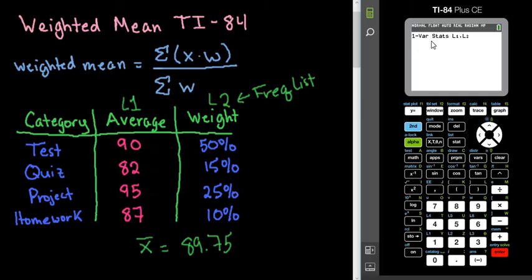To do this, you would just do the 1VarStats. Like I said, the stat. Go over to the Calculate, option 1. And then you would do 2nd. The number 1 would give you L1. The comma button is right here above the 7. And then I would do 2nd, L2, and then just hit enter, and you would get the same thing.